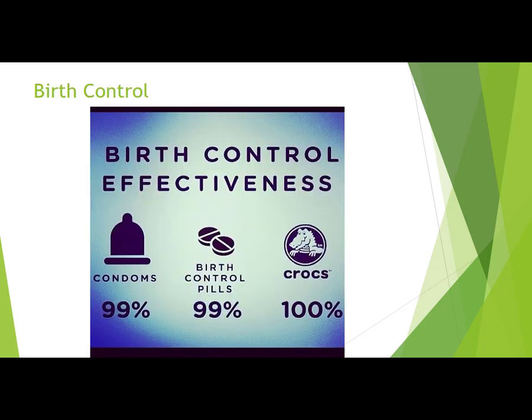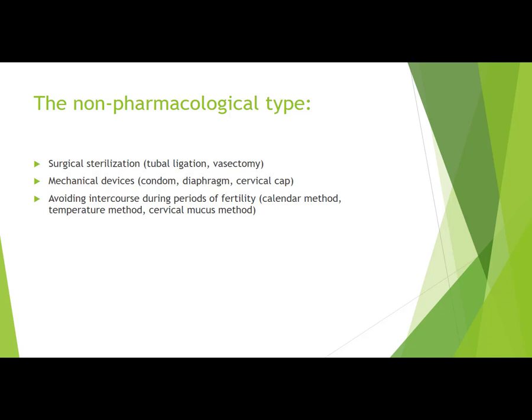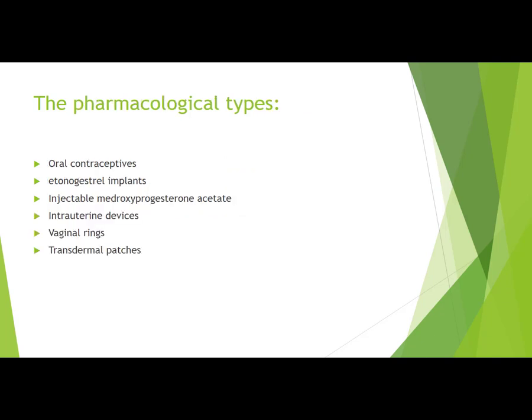Moving to birth control: non-pharmacologic options include surgical sterilization (tubal ligation and vasectomy), mechanical devices like condoms, diaphragms, and cervical caps, and avoiding intercourse during fertile periods using the calendar method, temperature method, or cervical mucus method. Pharmacological types include oral contraceptives, subdermal implants, injectable medroxyprogesterone acetate, intrauterine devices, vaginal rings, and transdermal patches.